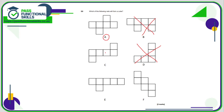Net E will not work because we don't have a square on the top, so we'll get rid of that one. Net F looks a bit confusing, but if you work it out by imagining the folds — make a fold here, call this the front, this will be the left-hand side, fold here for the top, fold here for the base, fold here for the right-hand side, and this will be the back — we do have a cube. So the nets that will make a cube are A, C, and F.